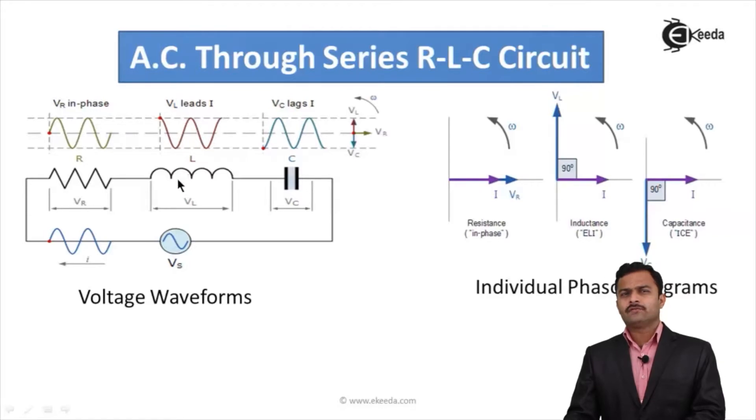For inductor, if current is a reference, voltage leads current by 90 degrees. This will be the nature of phasor diagram for voltage and current across inductor. For capacitor, if current is a reference, voltage lags current by 90 degrees. This will be the phasor diagram for voltage and current of pure capacitor.